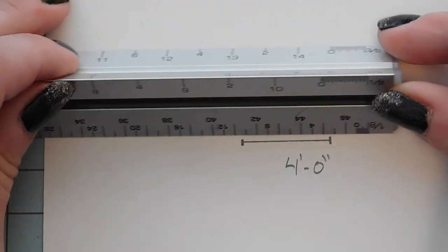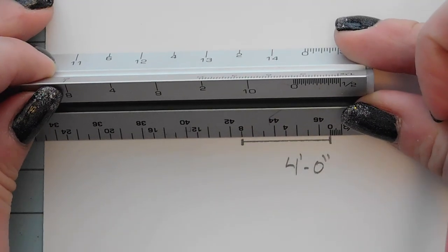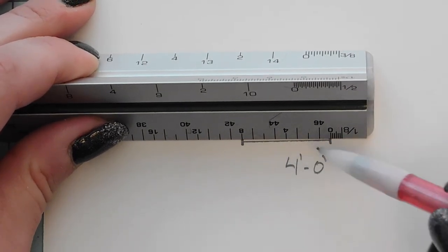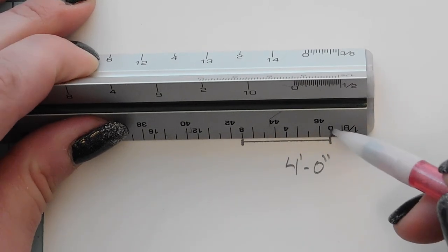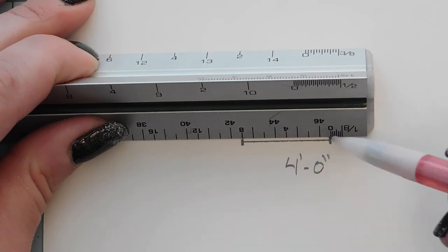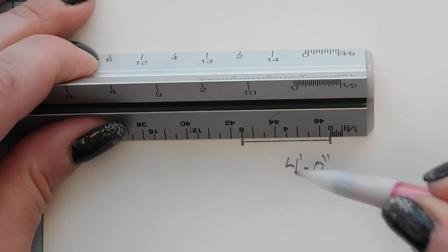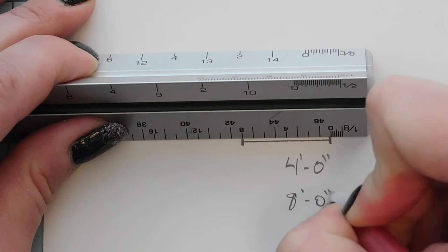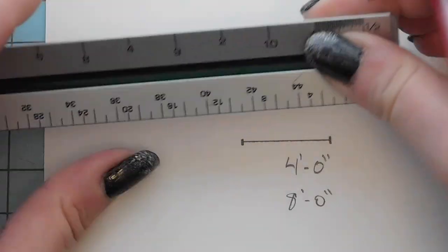But using our eighth inch scale, you might already be able to guess what it is, but we're able to count over using these smaller integers that are closer to the edge of our scale ruler, and we see that the eight is here. So that would be eight feet, zero inches, excuse my chicken scratch.